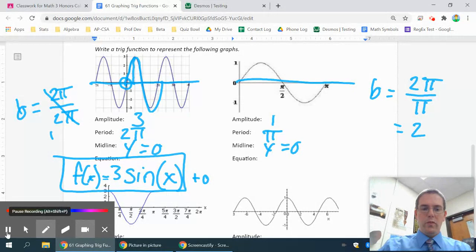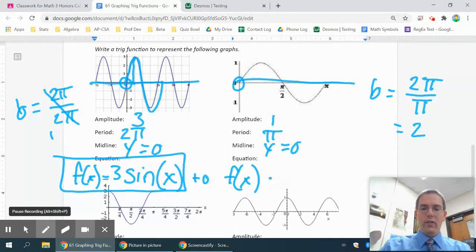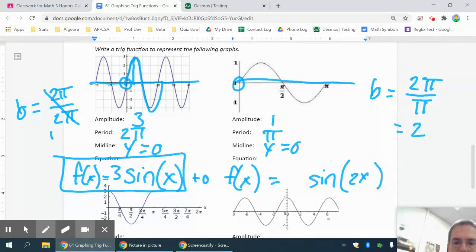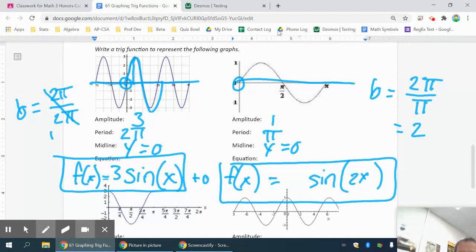And then when you go to write your equation, once again, since it's starting at 0, or at the midline I should say, that's going to be a sine equation. My b value is 2, so that's a 2x. Oops, get my picture out of the way there. And then the amplitude is 1, so I could put an understood 1 in front of my sine, but it's perfectly okay to do that. And once again, you could have a plus 0 on the end for the midline.